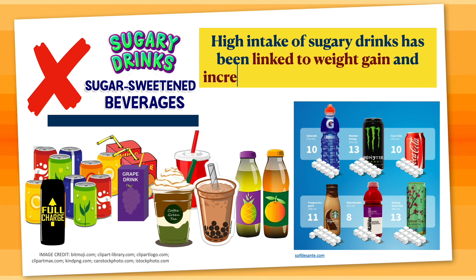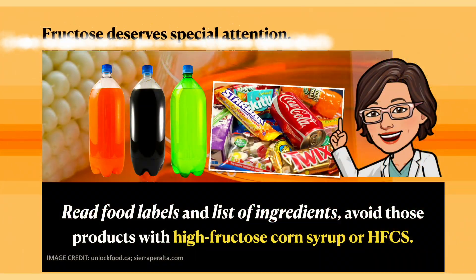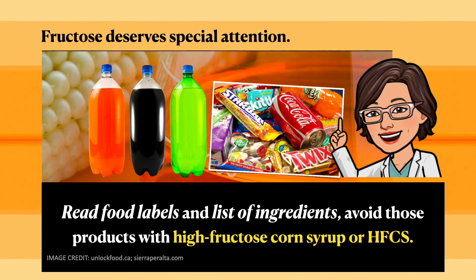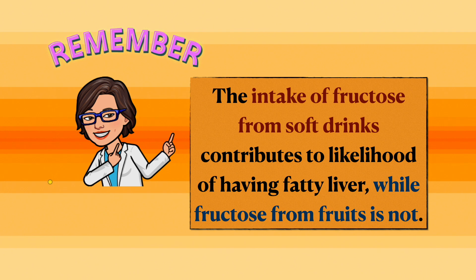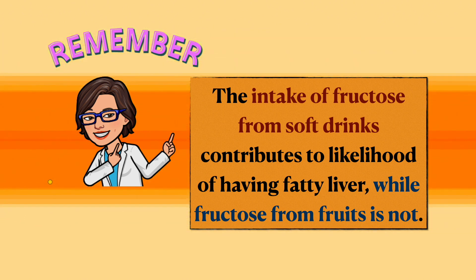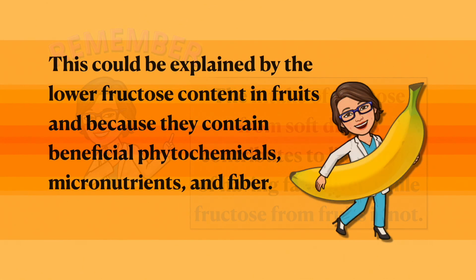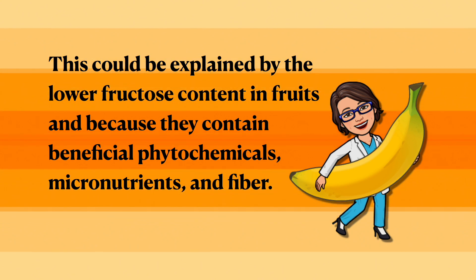High intake of sugary drinks has been linked to weight gain and an increase in blood fats. Fructose deserves special attention. Read food labels and lists of ingredients — avoid products with high fructose corn syrup. High fructose corn syrup is a form of added sugar that is readily changed into triglycerides in the body. The intake of fructose from soft drinks contributes to the likelihood of having fatty liver, while fructose from fruits does not. This is explained by the lower fructose content in fruits and because they contain beneficial phytochemicals, micronutrients, and fiber.